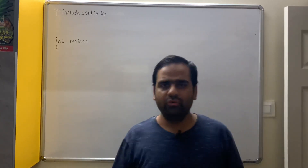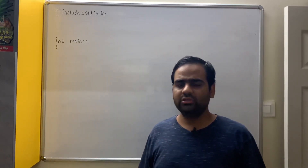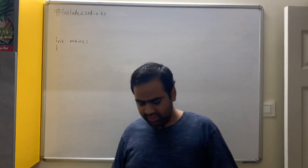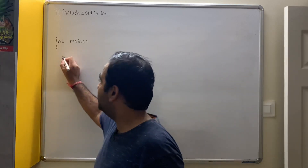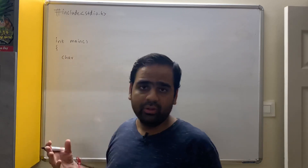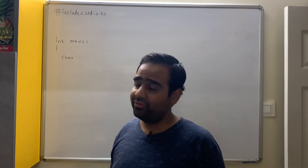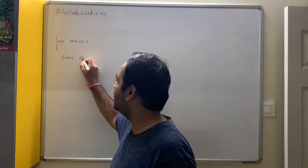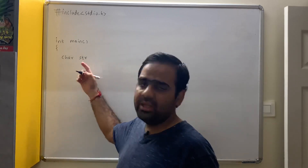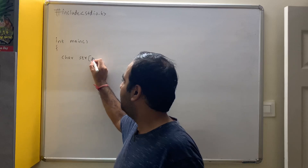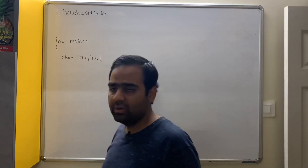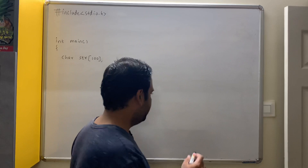Let us see how do we write the code for the function string length. We say main. Now we need a string here. A string is an array of characters, and you can give any character array name. Let's say char str[100]. You can give any size that you like. As soon as you do this, a variable is created in the main scope.